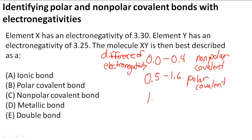And we have to know one more thing. If it is 1.7 or above, it's usually considered an ionic bond, or ionic bonding is going to happen between these atoms.